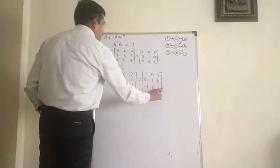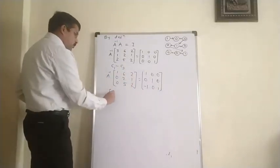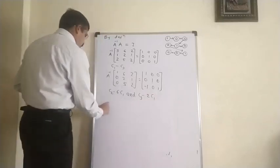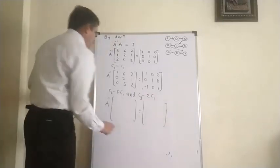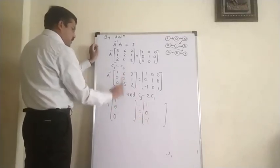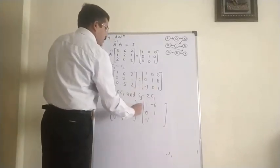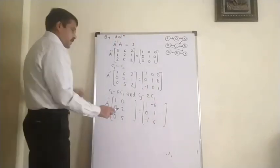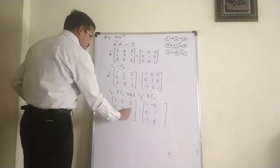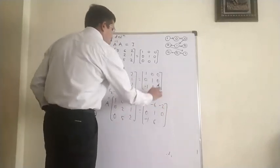Now, in order to make the second and third positions in the first row equal to 0, we use C2 minus 6·C1 and C3 minus 2·C1. Keeping C1 as 1, 0, 0: for C2 minus 6·C1, we get 6 minus 6 equals 0, 2 minus 0 is 2, 5 minus 0 is 5; on the right side, 0 minus 6 becomes minus 6, 1 minus 0 is 1, 0 plus 6 becomes 6. For C3 minus 2·C1: 2 minus 2 is 0, 1 minus 0 is 1, 2 minus 0 is 2; on the right side, minus 2, 0, and 3 (since 1 plus 2 becomes 3).